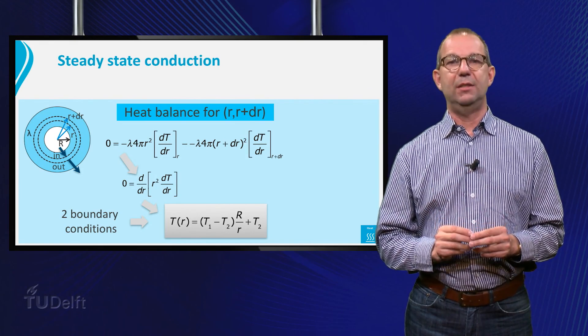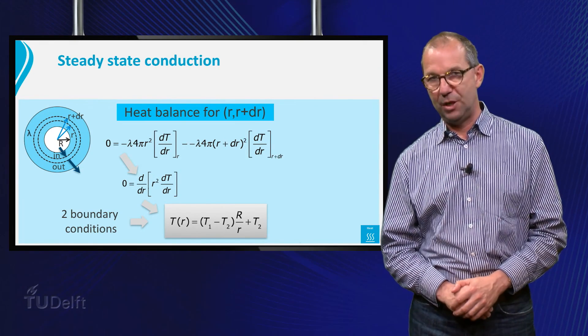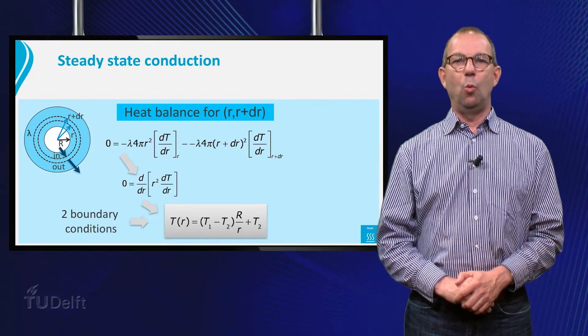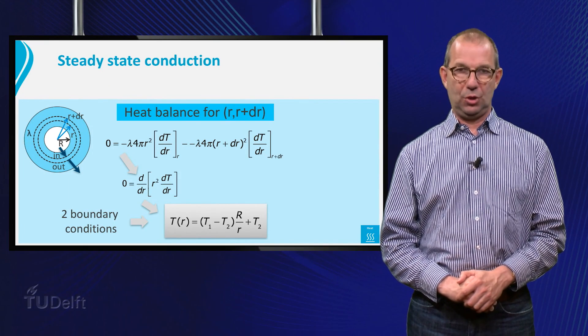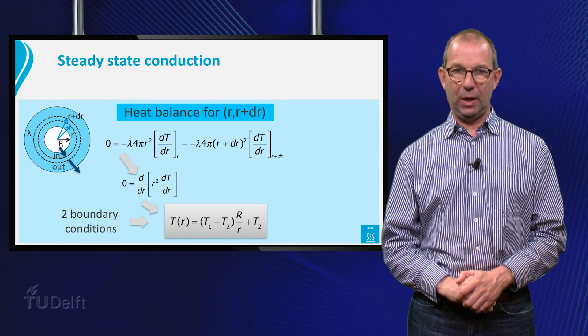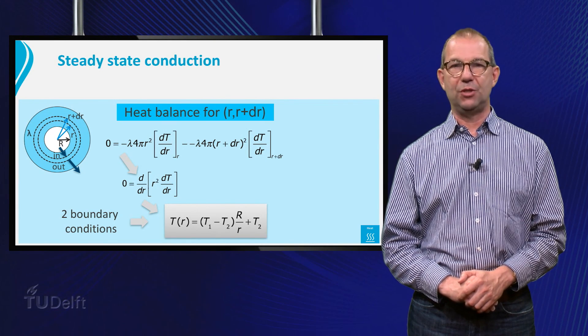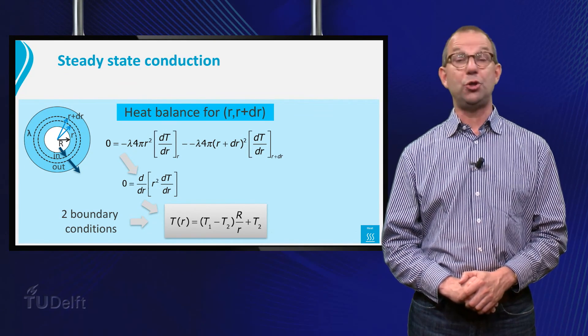With these we can find the exact temperature and concentration profiles. Once we have these, we could calculate the heat or mass flow rates and thus find the transfer coefficient and Nusselt or Sherwood.